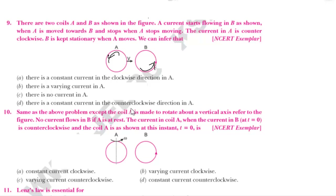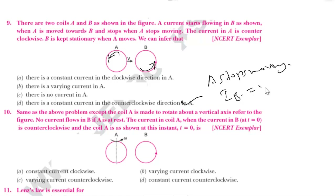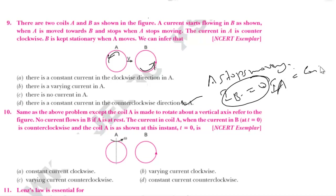There is constant current in the counterclockwise direction in A. When A stops moving, what will be the current in B? Current in B will be equal to zero. This is possible only if the current in A is constant — current in B equals zero means current in A must be constant.